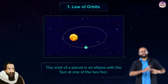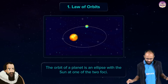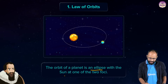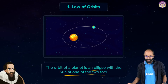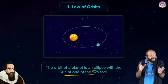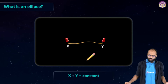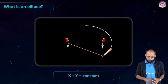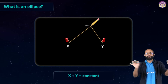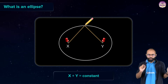Then came the First Law — the Law of Orbits. Kepler said: the orbit of a planet is an ellipse with the sun at one of the two foci. An ellipse is a flattened circle with two foci. To understand what an ellipse is, take two pins and connect them using a loose thread.